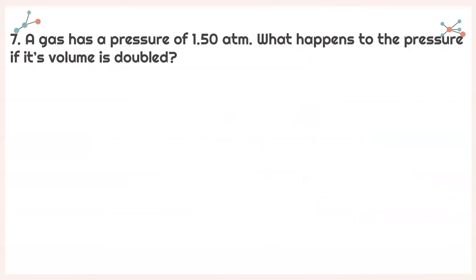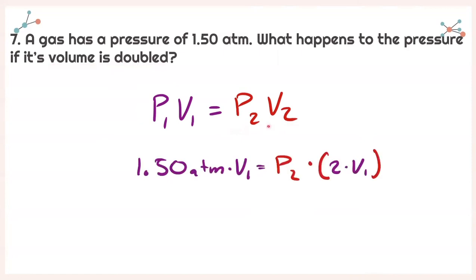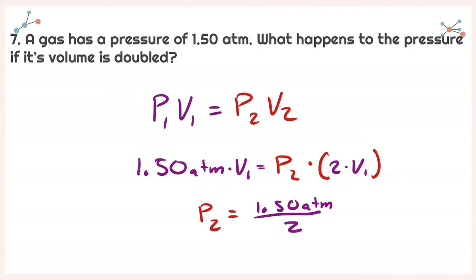For number 7, a gas has a pressure of 1.50 atmospheres. What happens to the pressure if its volume is doubled? Using P1 times V1 equals P2 times V2 — we want to find P2, but we're not given a specific second volume. However, we know the volume is doubled, so V2 equals 2 times V1. Canceling out V1, P2 equals 1.50 atmospheres divided by 2, giving a final pressure of 0.750 atmospheres.